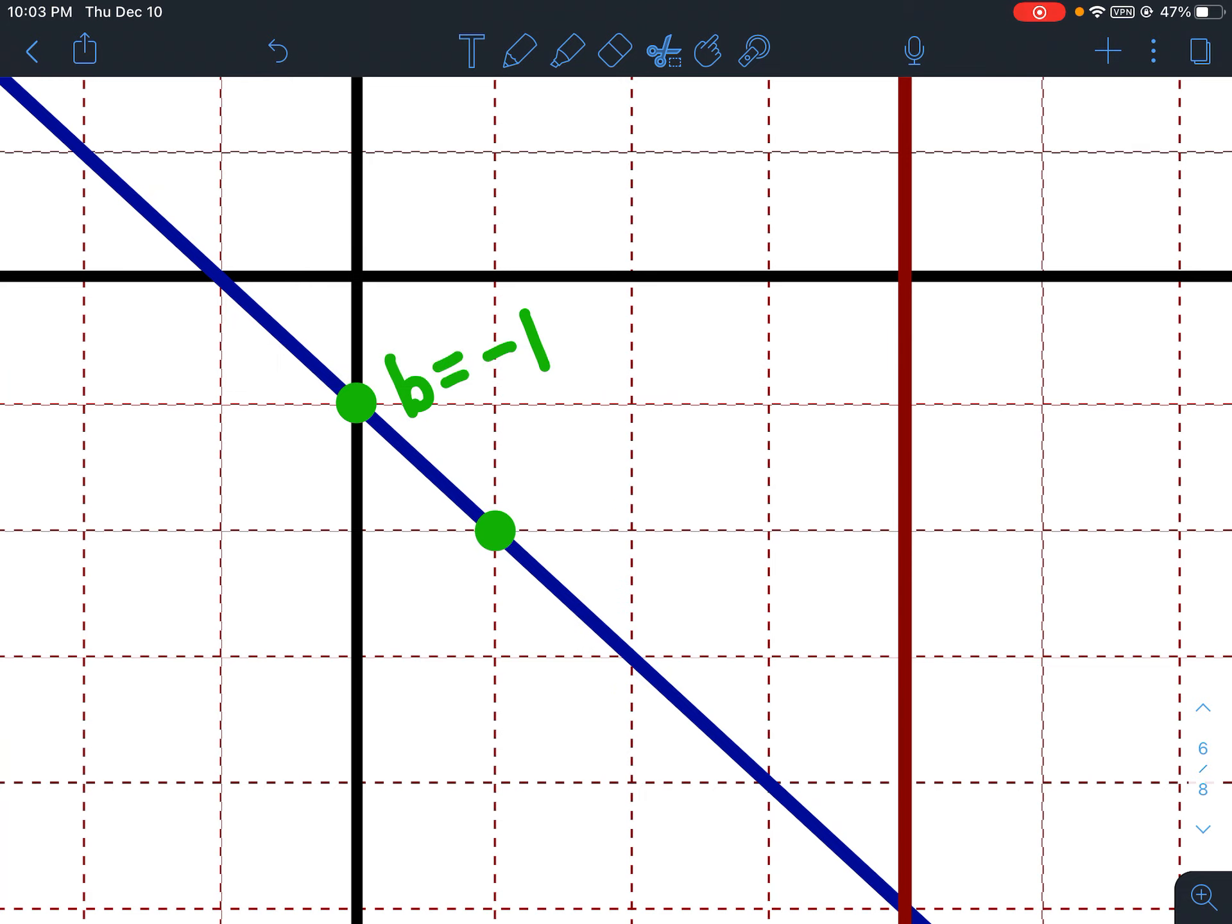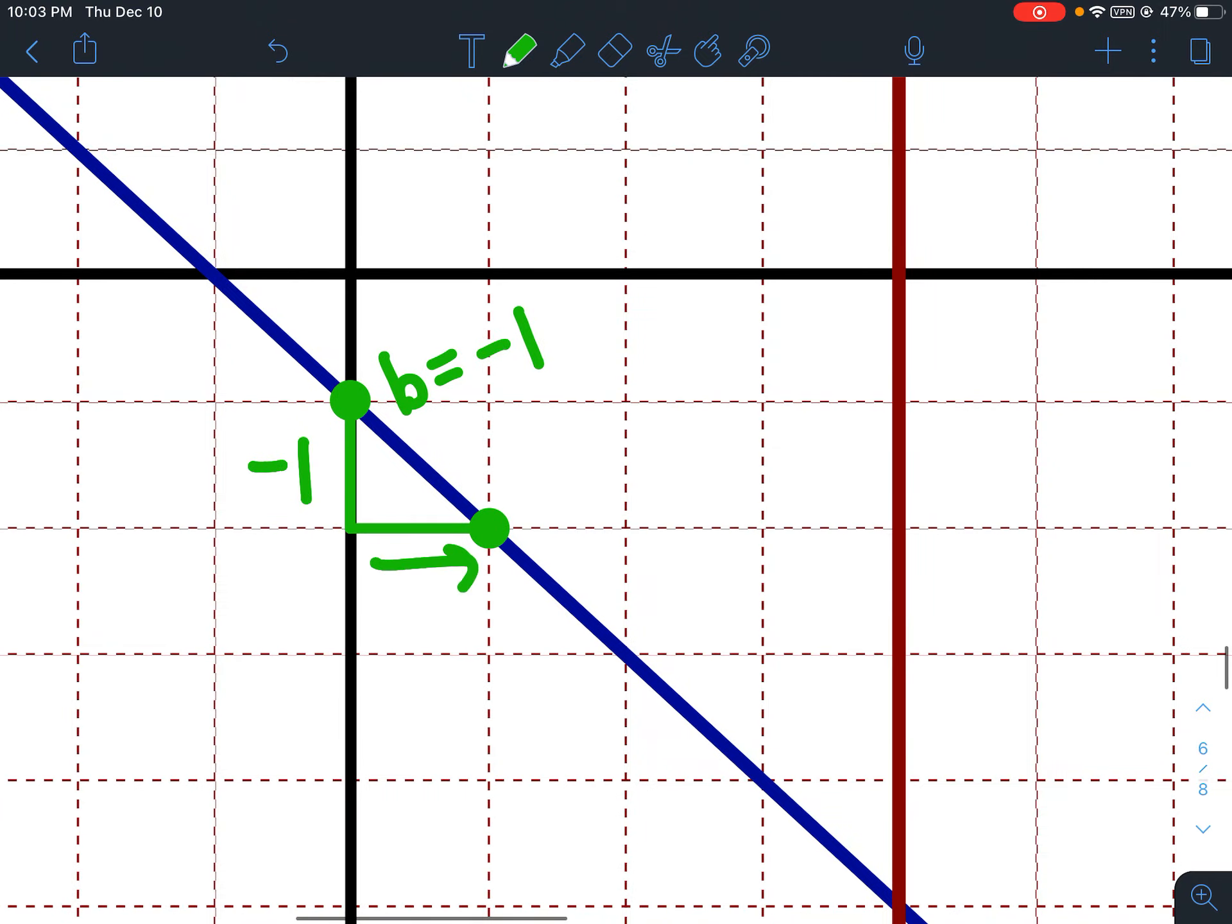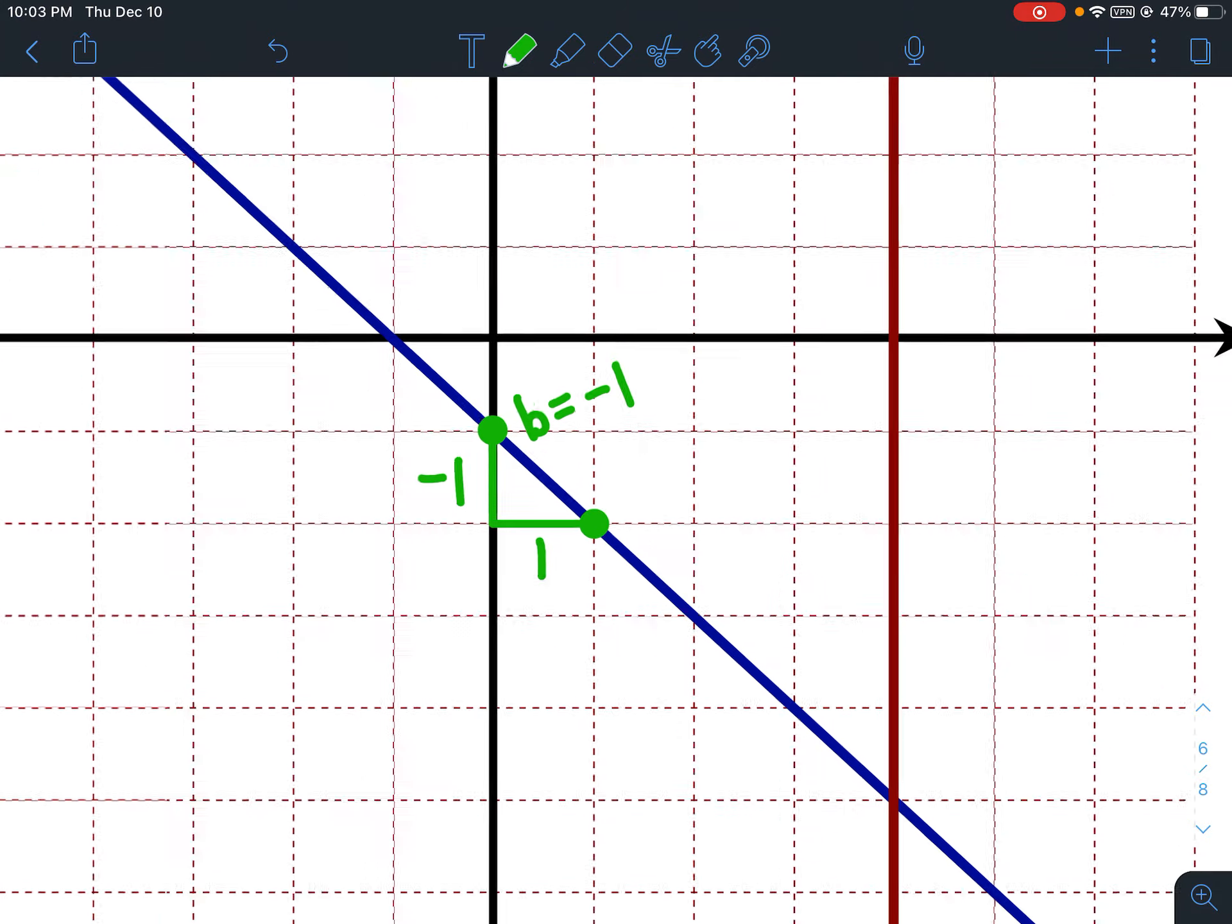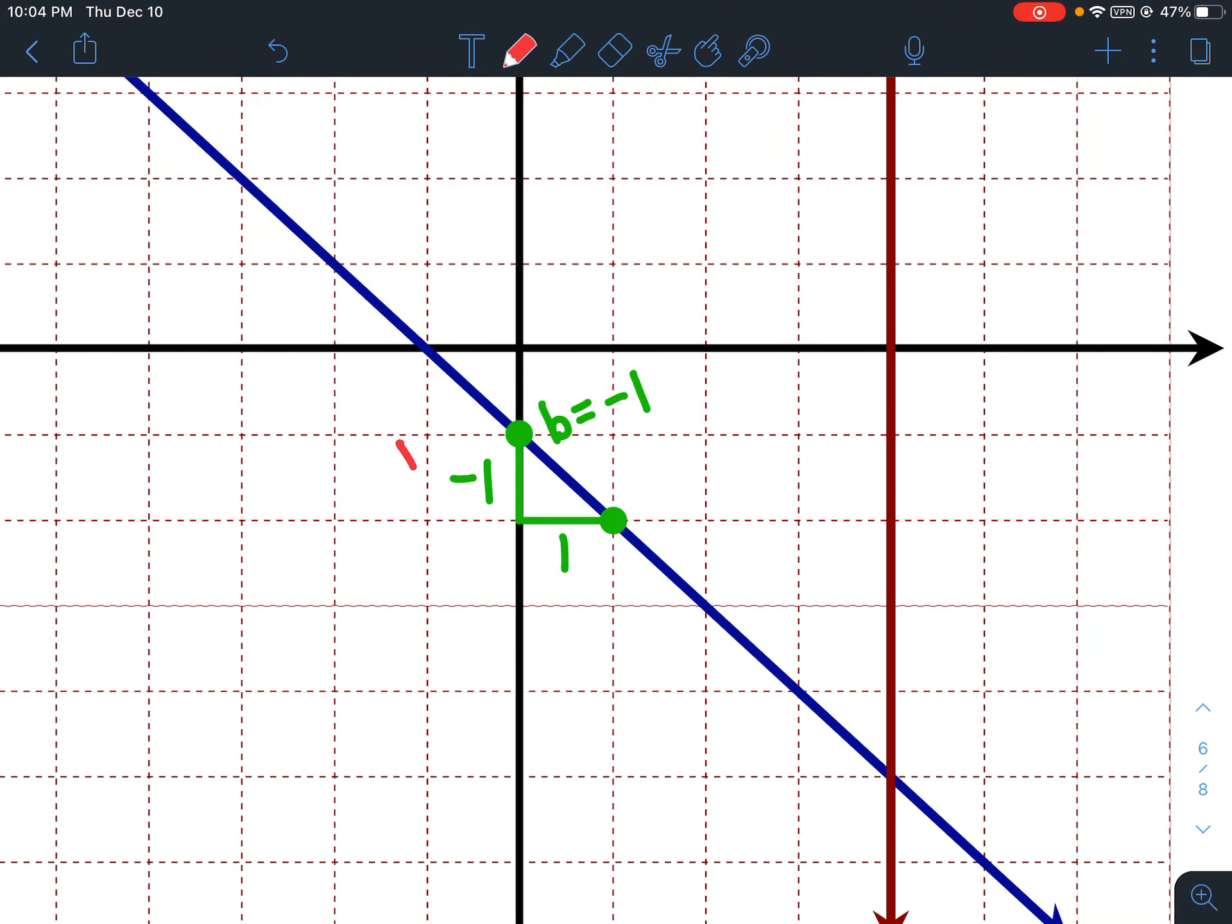Alright, so now, going from left to right, my line is going down. Which means I go down first. Then, I go to the right. So, going down 1 means my slope, or my rise, is negative 1. Going to the right 1 means my run is positive 1. So, for the notes, I want you to write rise here, and run down here.